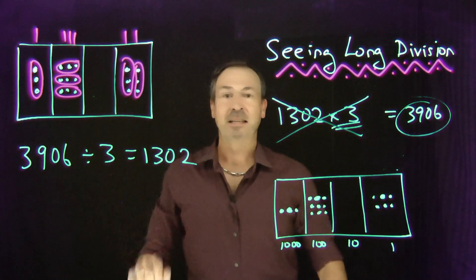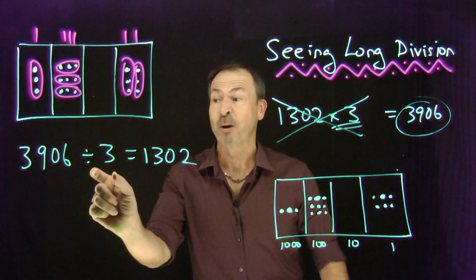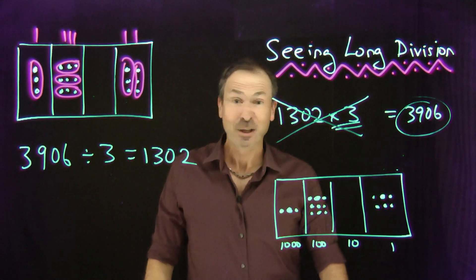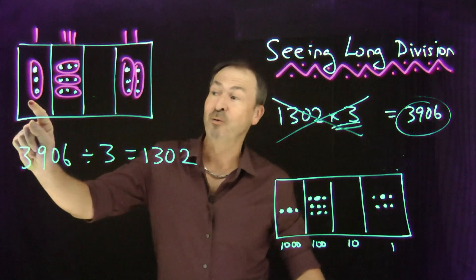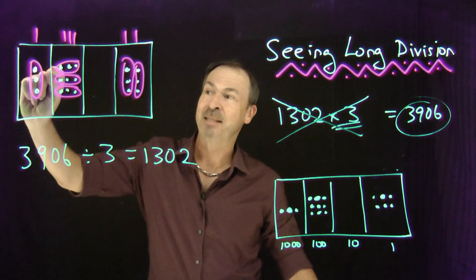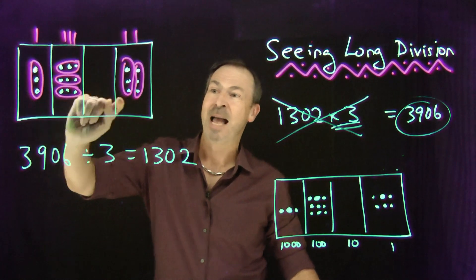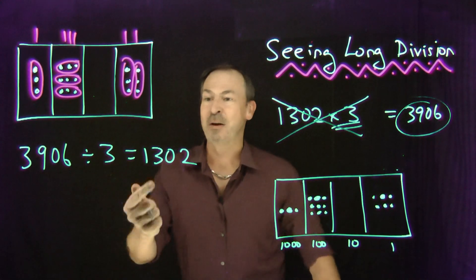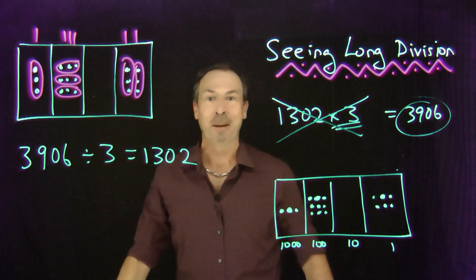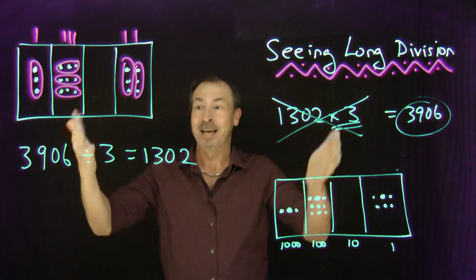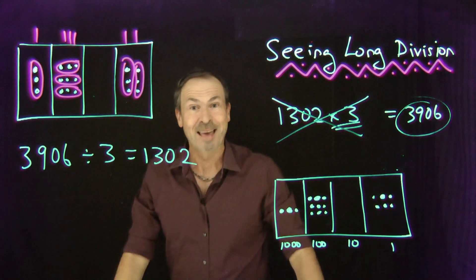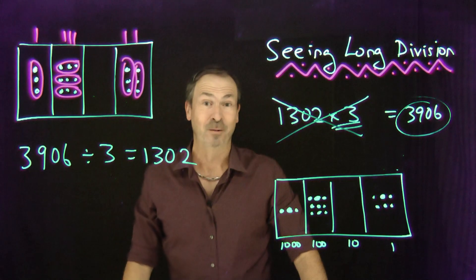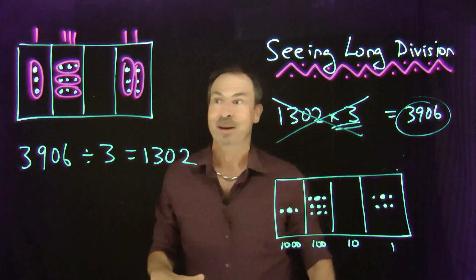A lot of people like to think of division as groups — like how many threes go into 3,906. I'm actually seeing that too: one group of three at the thousands level, three groups of three at the hundreds level, and two groups of three at the units level. I'm seeing one thousand three hundred and two groups of three in that picture. This is visual, this is beautiful — this has real conceptual depth.